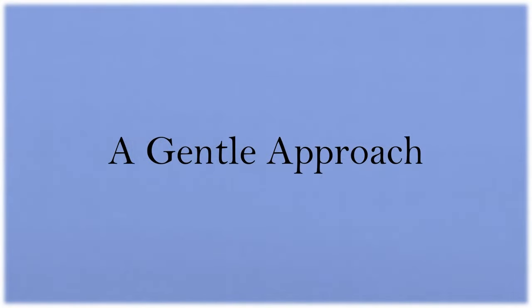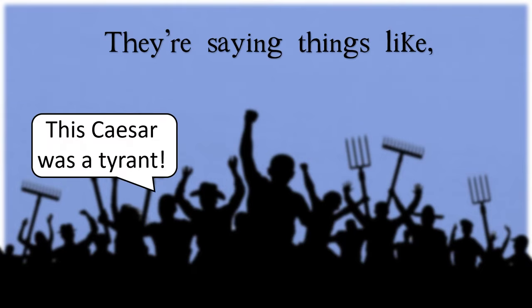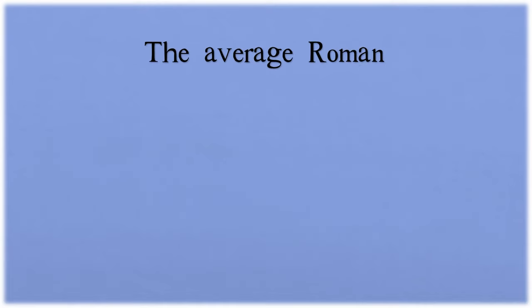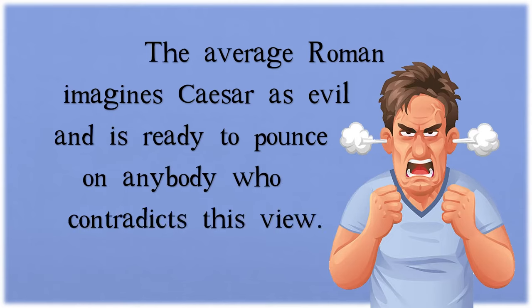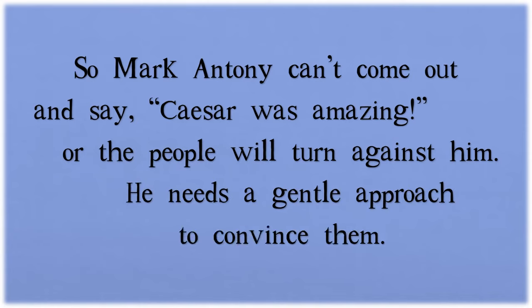A gentle approach. Before Mark Antony begins speaking, the Romans are riled up by Brutus' speech. They're saying things like 'This Caesar was a tyrant' and 'We are blessed that Rome is rid of him.' The average Roman imagines Caesar as evil and is ready to pounce on anybody who contradicts this view. So Mark Antony can't come out and say Caesar was amazing — the people would turn against him. He needs a gentle approach to convince them.